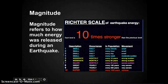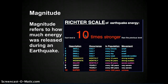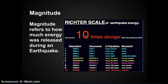So what is the magnitude? Magnitude refers to how much energy was released during an earthquake. When we use the scale called the Richter scale, every level is 10 times stronger. The Richter scale is what we used until about 30-40 years ago. We use a different scale now, but sometimes you'll still hear the Richter scale used in the news.